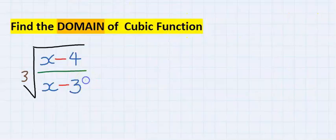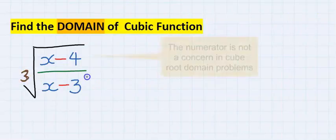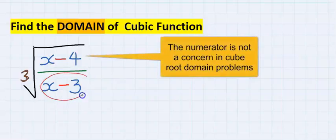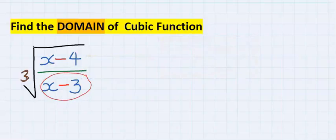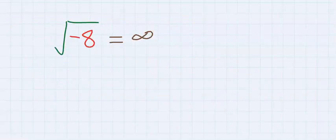With these rules in mind and because of the presence of the cube root, we are trying to avoid getting zero at the denominator. We are not concerned with the minus. In mathematics, the square root of minus eight...